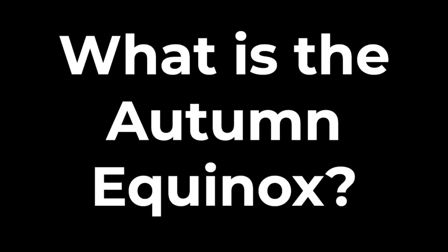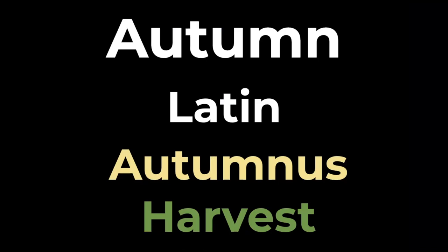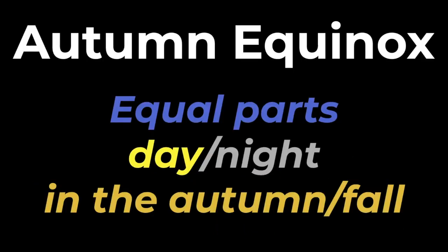What is the autumn equinox? It's considered the first day of fall or autumn, and one of the two days throughout the year in which the day and night are of equal length. If you break down the word autumn, it comes from the Latin term meaning harvest, and equinox means equal night. So put that together and you have the autumn equinox, which are equal parts day and night in the autumn and fall.